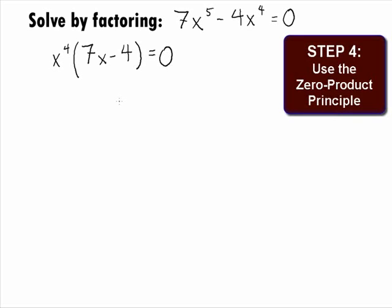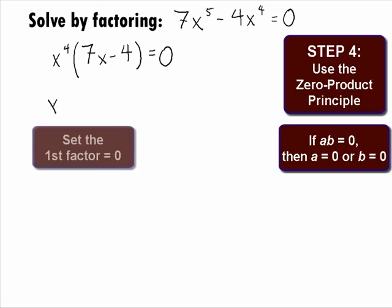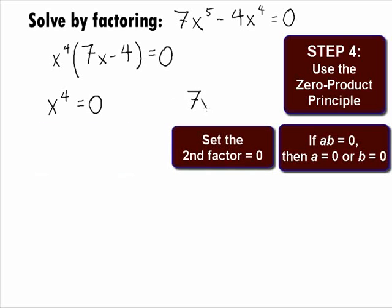In Step 4, we want to use the Zero Product Principle. This principle states that if you have a product of factors set equal to 0, then the solution could be found by setting each separate factor equal to 0. Setting each factor equal to 0, we will get x to the 4th equals 0 or 7x minus 4 equals 0.